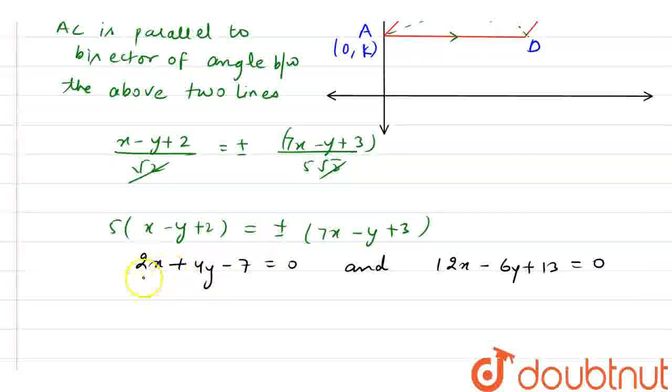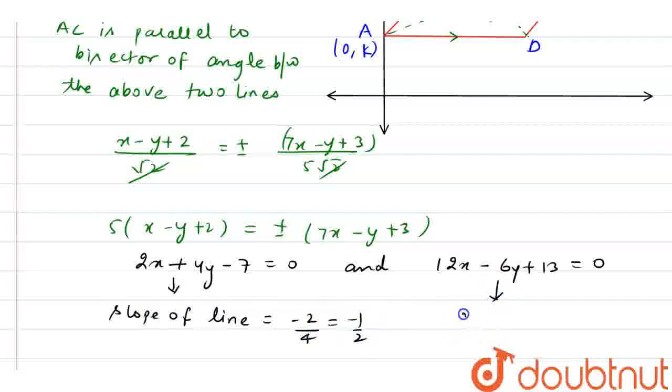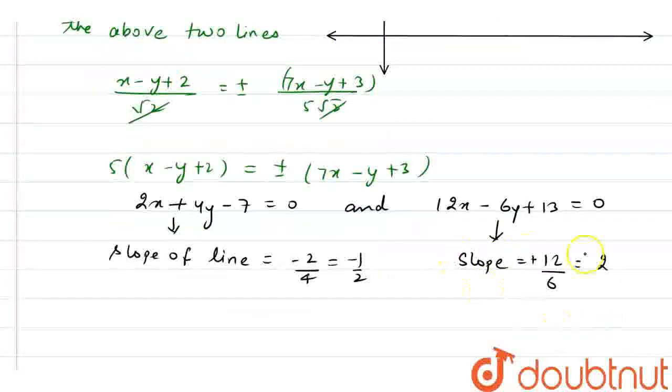Now, I can say slope of this line, slope of line will be -2/4 that is -1/2. And slope of this line is positive of 12/6, so we have 2 here.